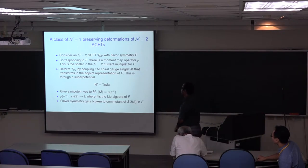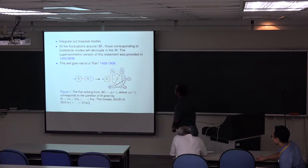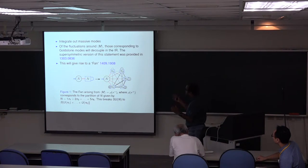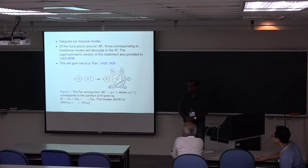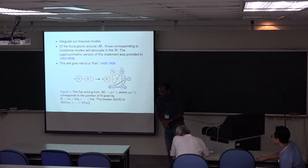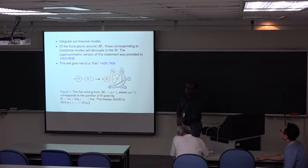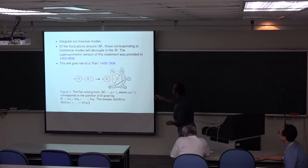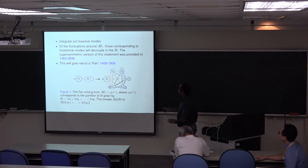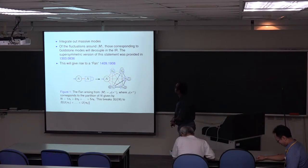Due to this vev, the flavor symmetry of my theory gets broken to the commutant of SU(2) in F. What we do then is integrate out the massive modes. We also consider fluctuations around the vev. Some of these fluctuations correspond to Goldstone modes, which are derivatively coupled and always have higher dimensional couplings in the Lagrangian — this is the regular Coleman-Weinberg mechanism. So in the IR, all these Goldstone modes will decouple. We remove these Goldstone modes, integrate out the massive modes, and in the process we obtain an N equals 1 Lagrangian.